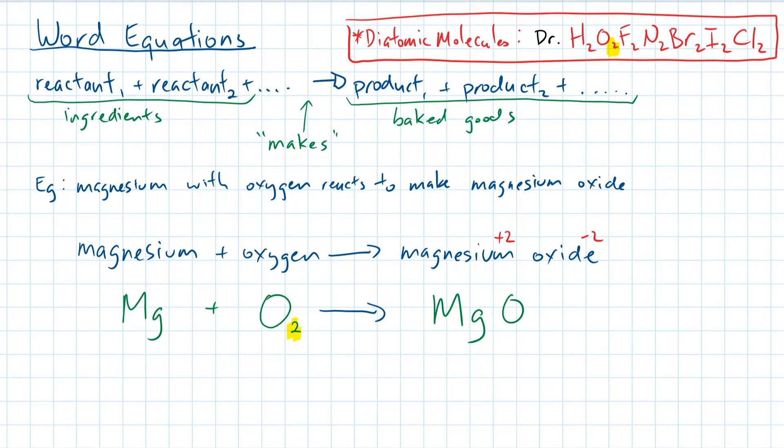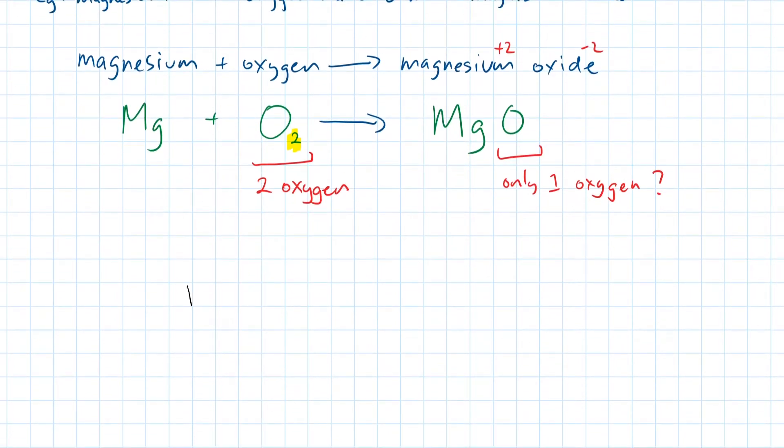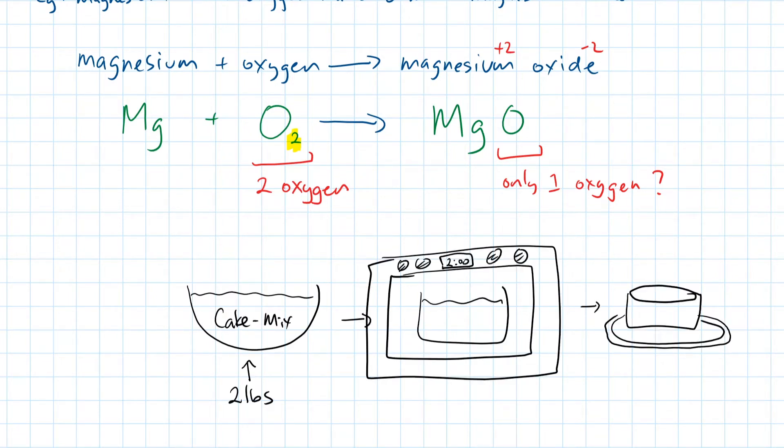Keep in mind that in a skeletal equation, the quantities of each element are not correct. We see that we started off with two oxygens, but somehow finished off with just one oxygen. And that's not physically possible. When you bake a cake, if your cake mix weighs 2 pounds, then your cake should still weigh 2 pounds when it's done. To fix this problem, let's move on to the next chapter.